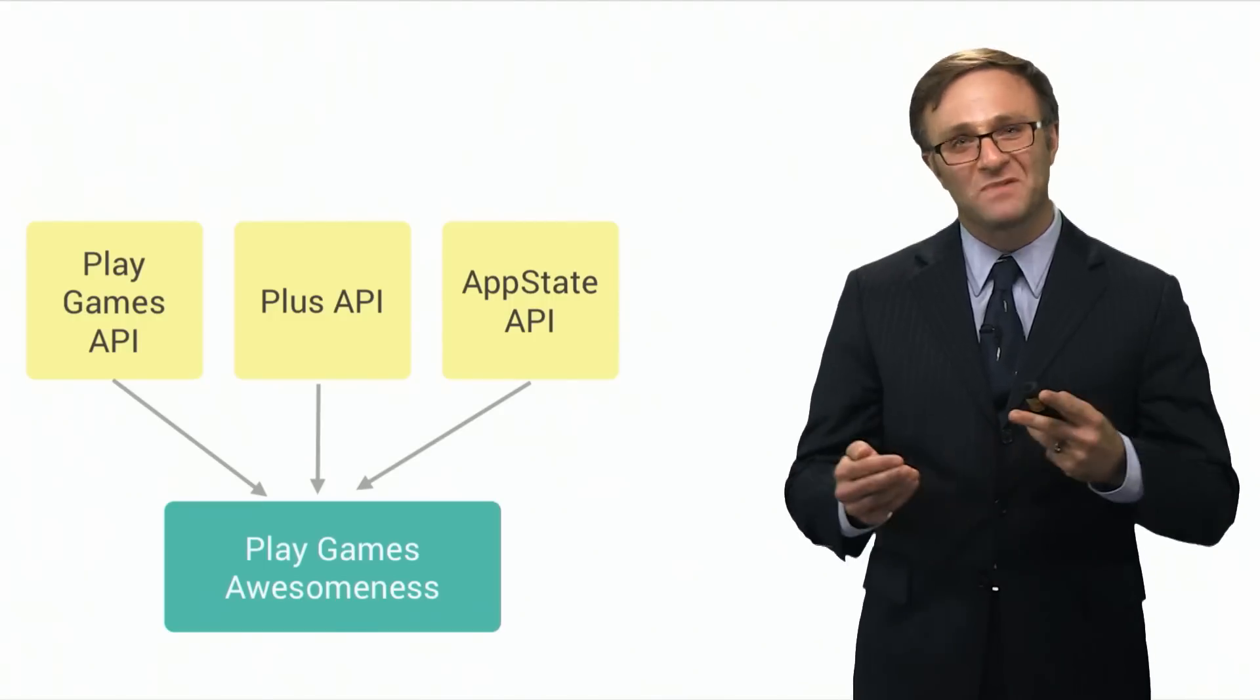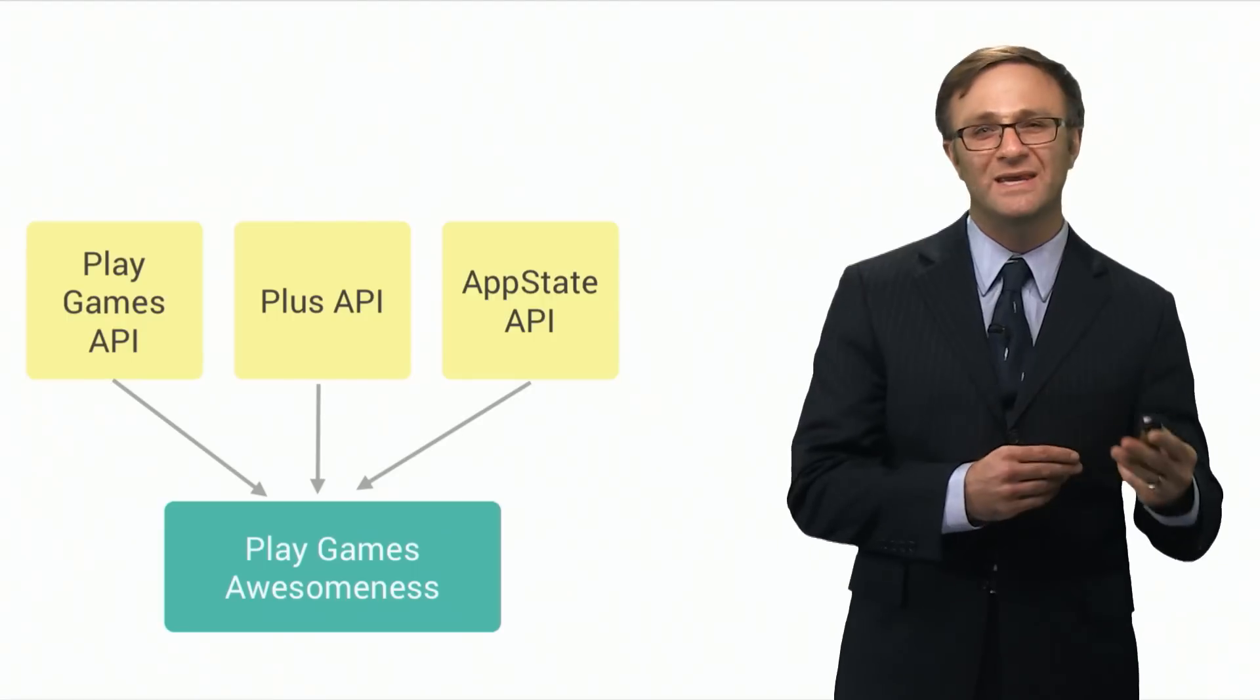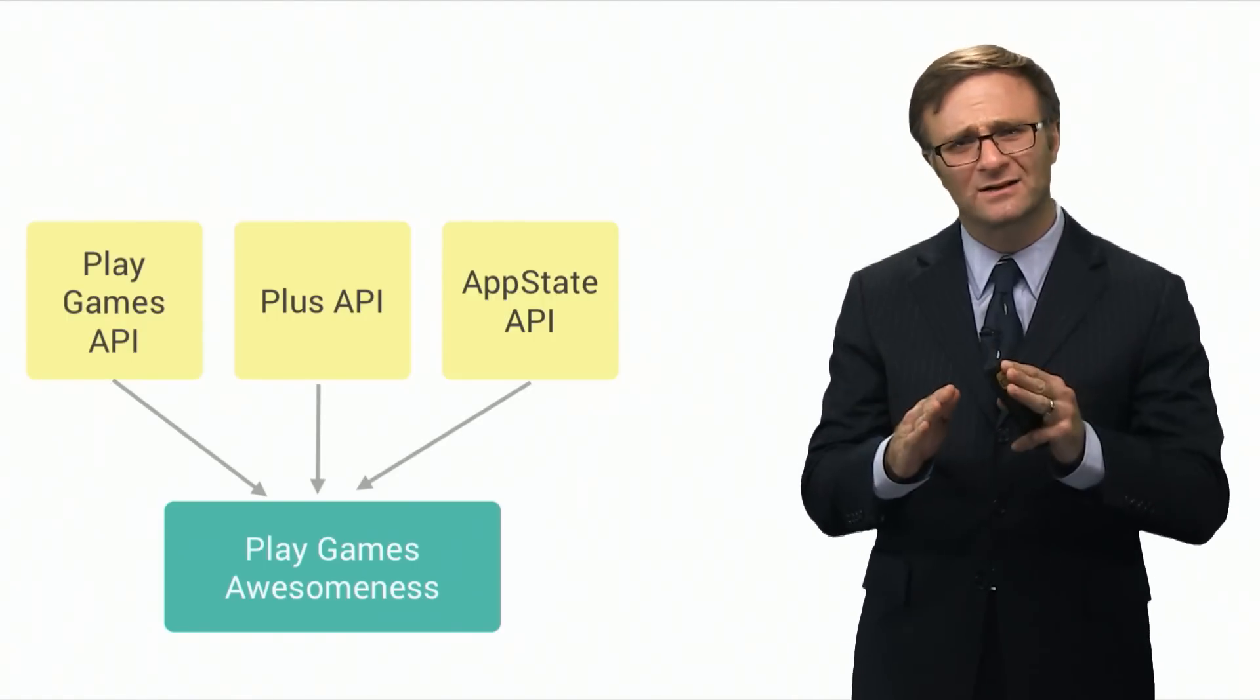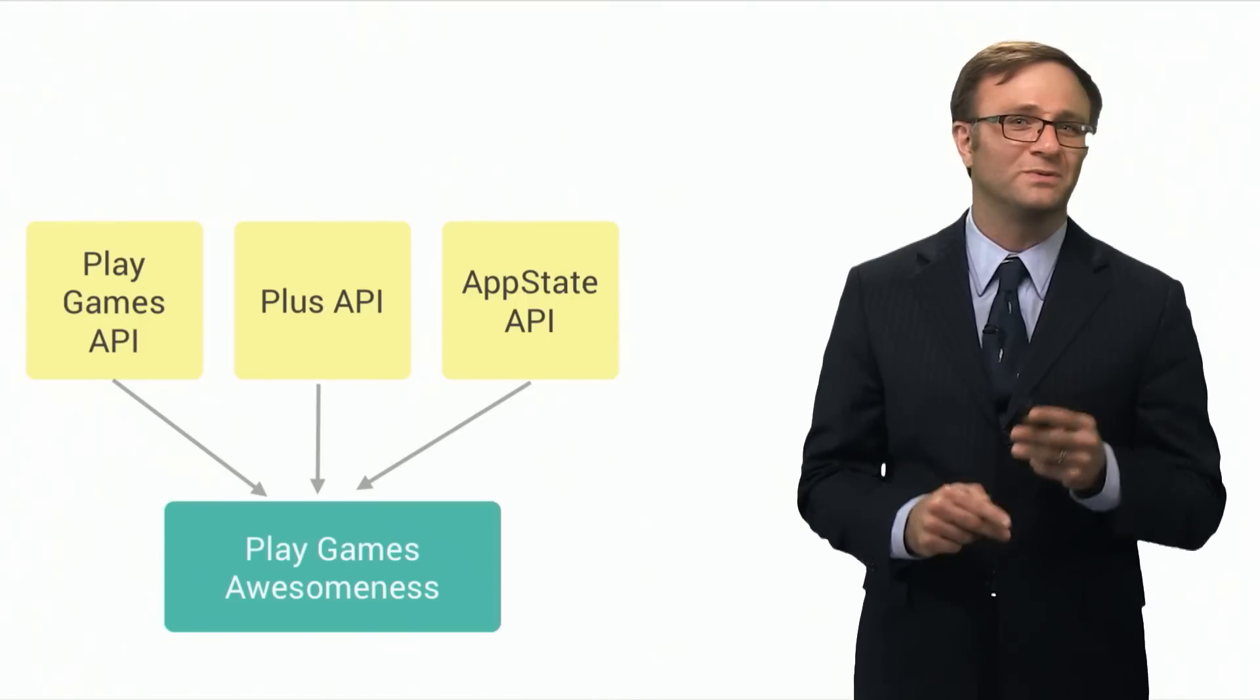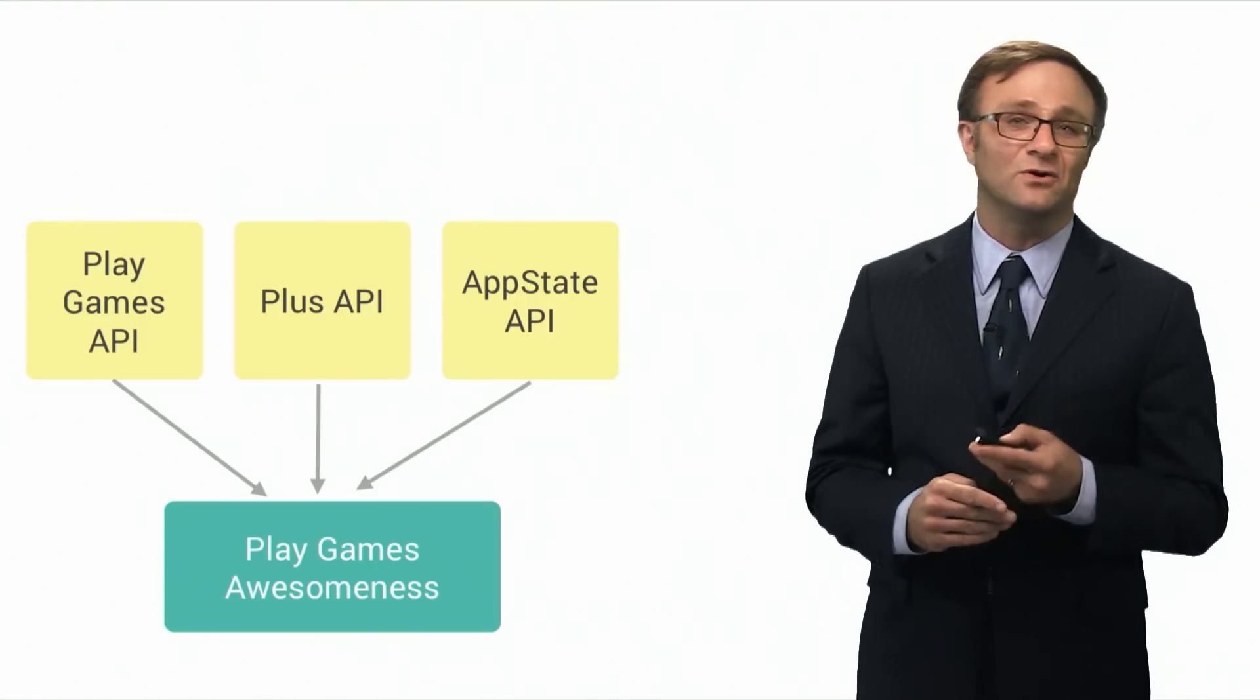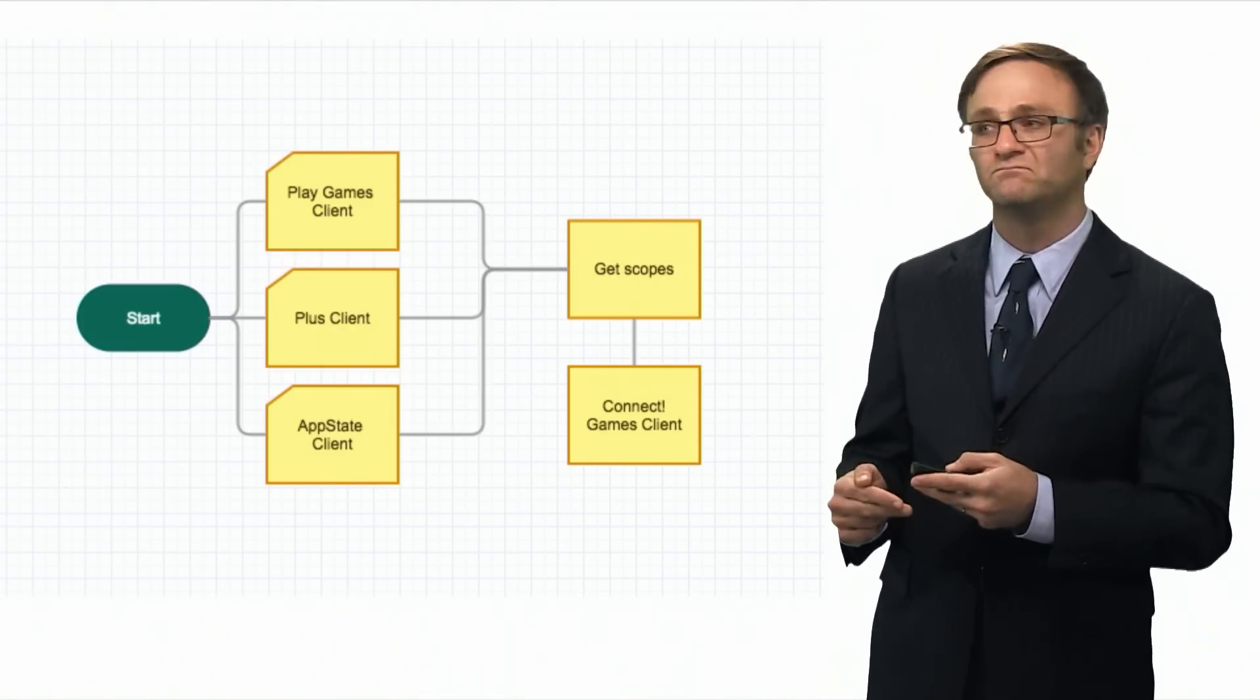And it turns out that, in the old days, the process for using more than one API client was something that we in the engineering field like to refer to as, and this is a technical term, a bit of a mess. You see, to connect the player properly to Google Play Games, the first thing you had to do was create your three clients, and you'd collect the scopes you need and call connect on the games client. So far, so good, right?